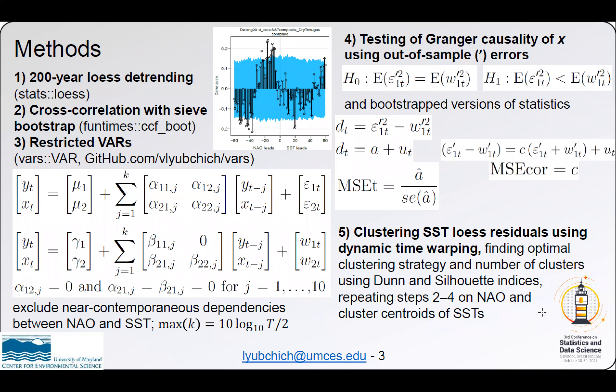The methods we used included detrending the data using 200-year loess functions. We developed a cross-correlation function with the CF bootstrap to account for autocorrelation of time series while calculating their cross-correlations. We also applied restricted vector autoregressions to exclude near-contemporaneous dependencies between NAO and SSTs.